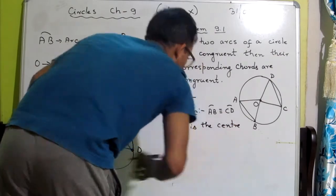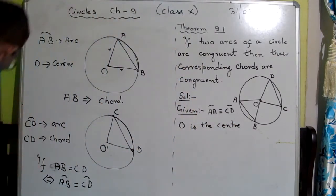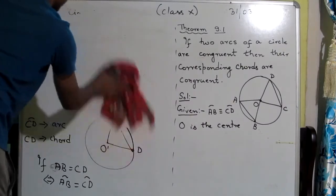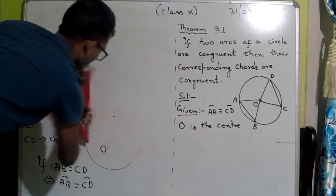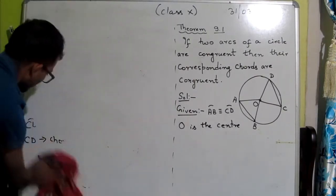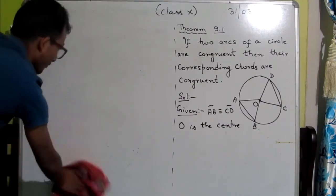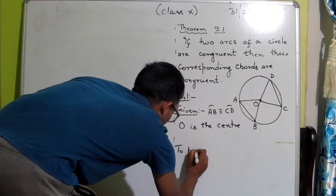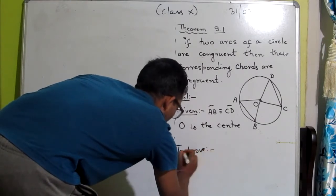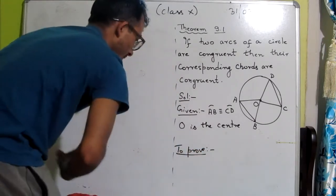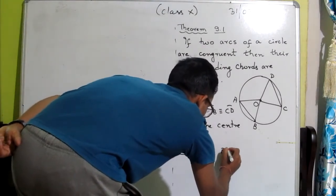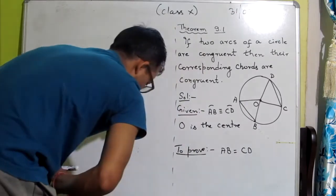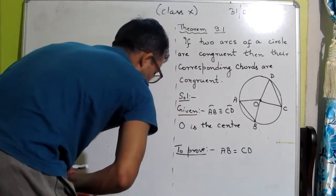O is the center of the circle. To prove: chord AB is equal to chord CD. We need to prove that AB equals CD, that is, the chords are equal.